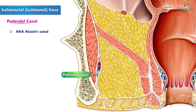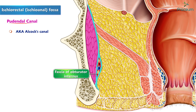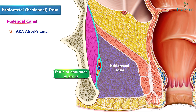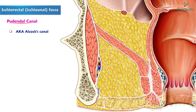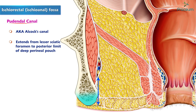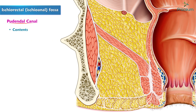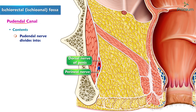The Alcock canal, also known as the pudendal canal, is a sheath derived from the fascia of the obturator internus muscle and is found in the lower lateral wall of the ischiorectal fossa. It is located one inch or 2.5 centimeters above the ischial tuberosity. It extends from the lesser sciatic foramen to the posterior limit of the deep perineal pouch. Its contents include the pudendal nerve, which divides within the canal into the dorsal nerve of the penis and the perineal nerve, as well as the internal pudendal artery and vein.